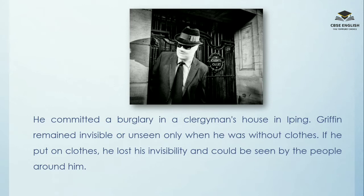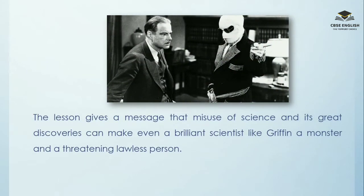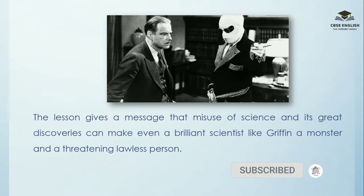Griffin remained invisible or unseen only when he was without clothes. If he put on clothes, he lost his invisibility and could be seen by the people around him. The lesson gives a message that misuse of science and its great discoveries can make even a brilliant scientist like Griffin a monster and a threatening lawless person.